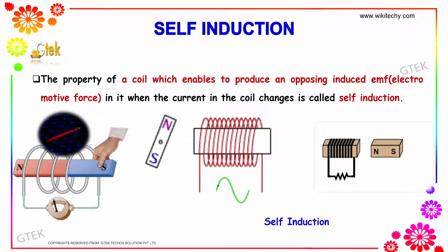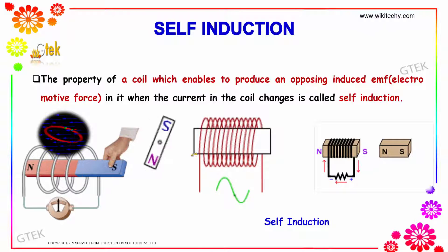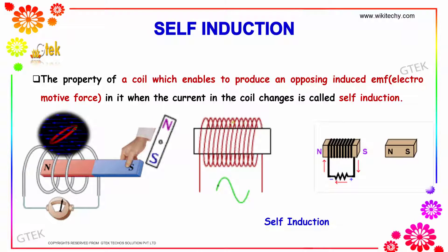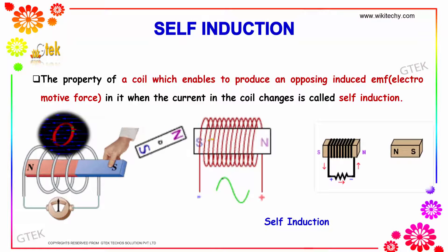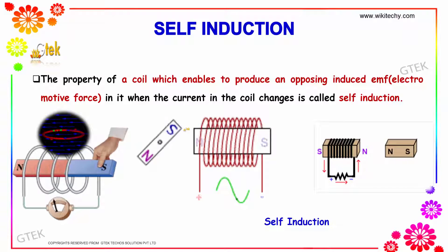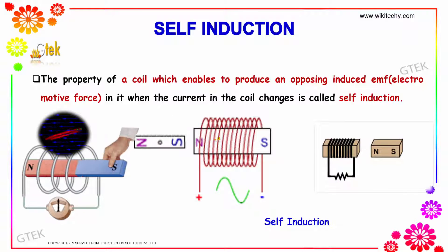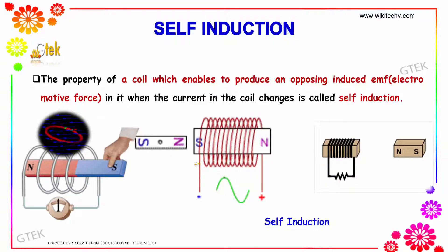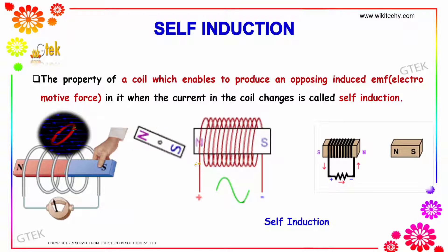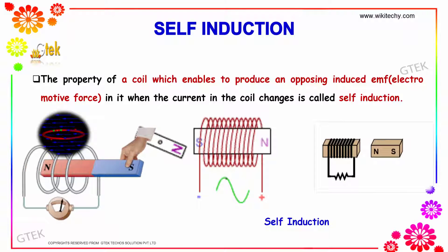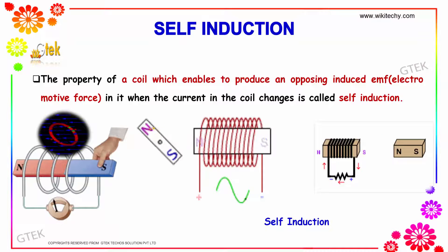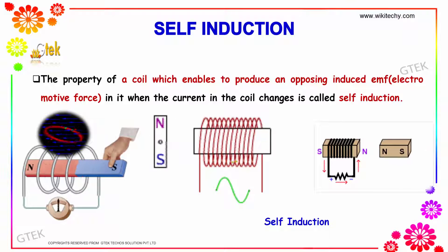The property of a coil which enables it to produce an opposing induced EMF when the current in the coil changes — that is called self-induction. This is the property of the coil where changes in current produce an effect in the opposite direction.